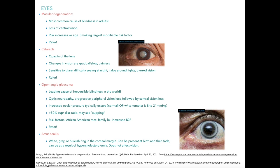Macular degeneration is the most common cause of blindness in adults. Patients complain of loss of central vision, which greatly impacts quality of life. The risk increases with age, and smoking is the largest modifiable risk factor — educate patients to avoid smoking as it has been linked to worsening macular degeneration. These patients should be referred.